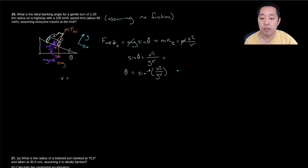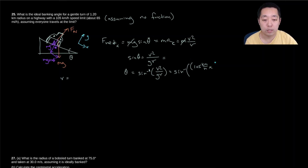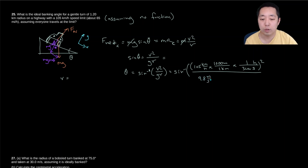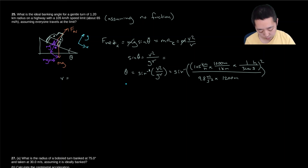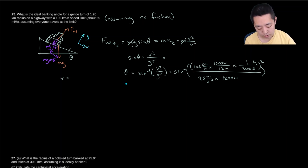For v, I take 105 kilometers per hour and convert: multiply by 1000 meters per kilometer and divide by 3600 seconds per hour. Then I square that, divide by g = 9.8 m/s², and divide by r = 1200 meters. Taking the inverse sine: θ = sin⁻¹(105000/3600)² / (9.8 × 1200) gives theta equal to 4.15 degrees.